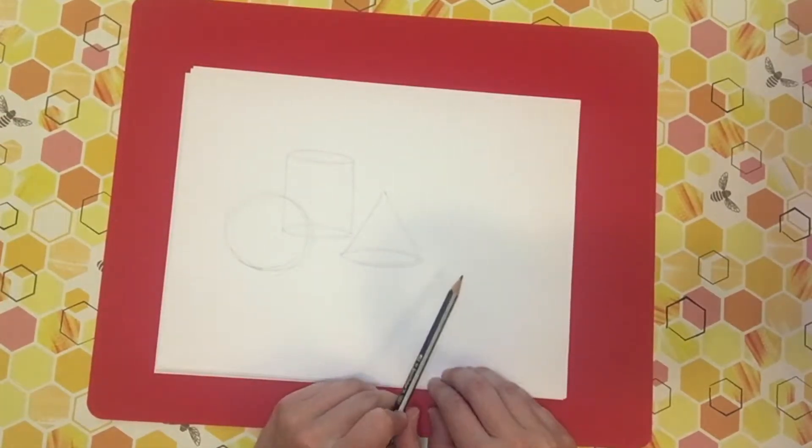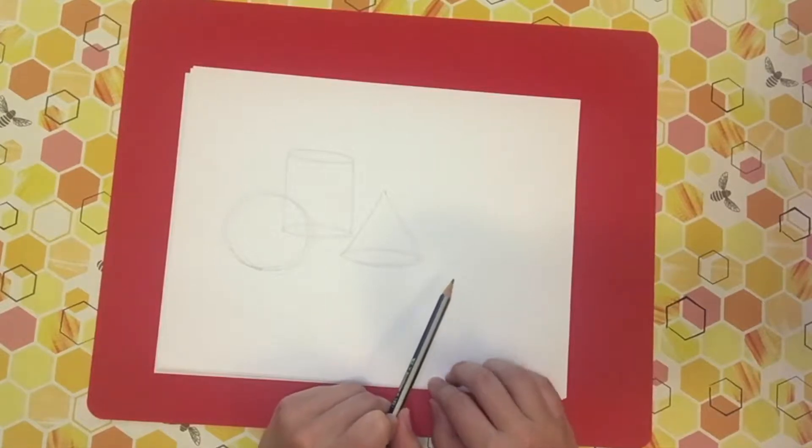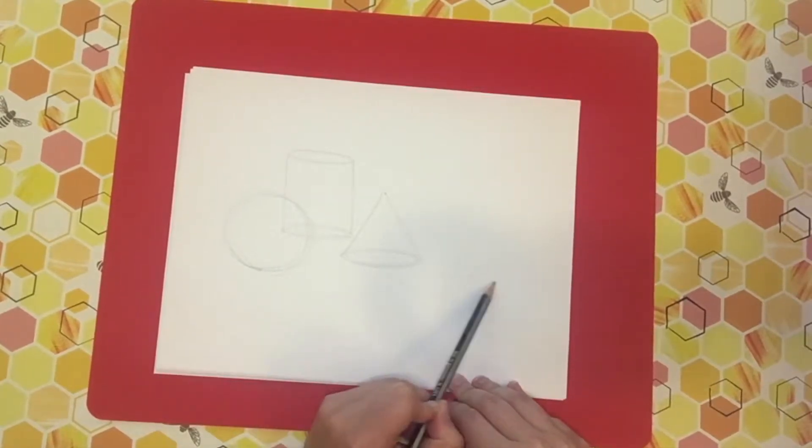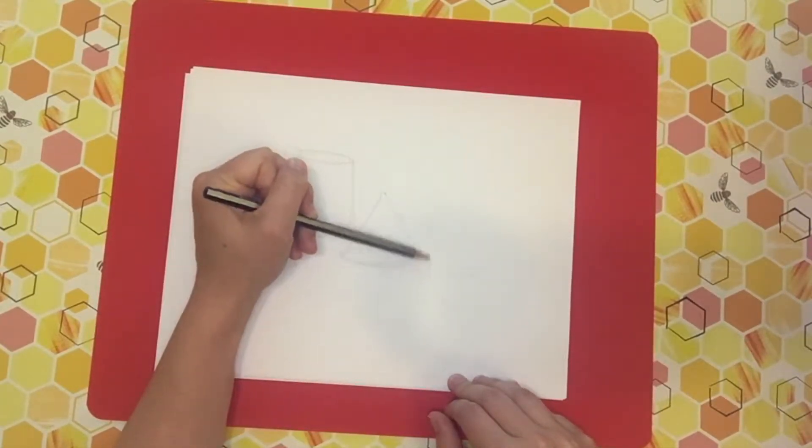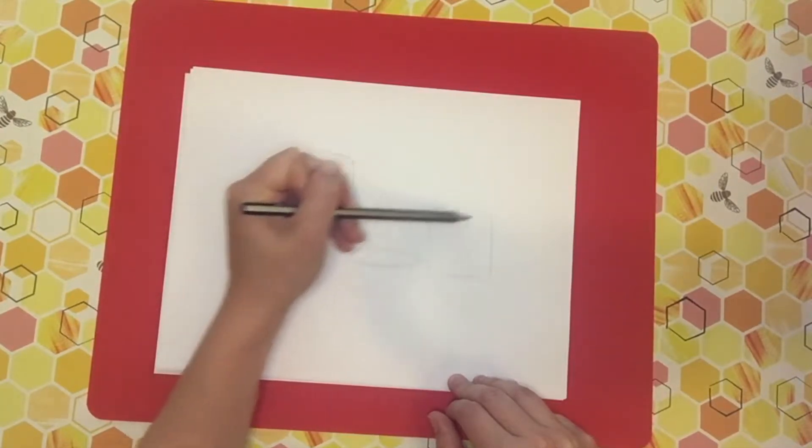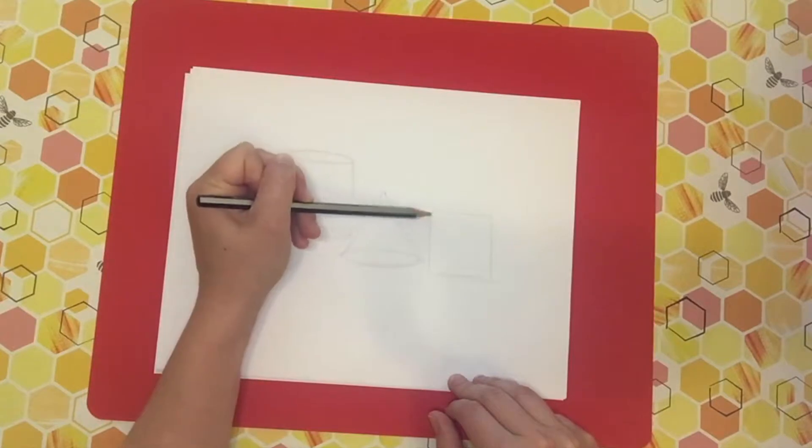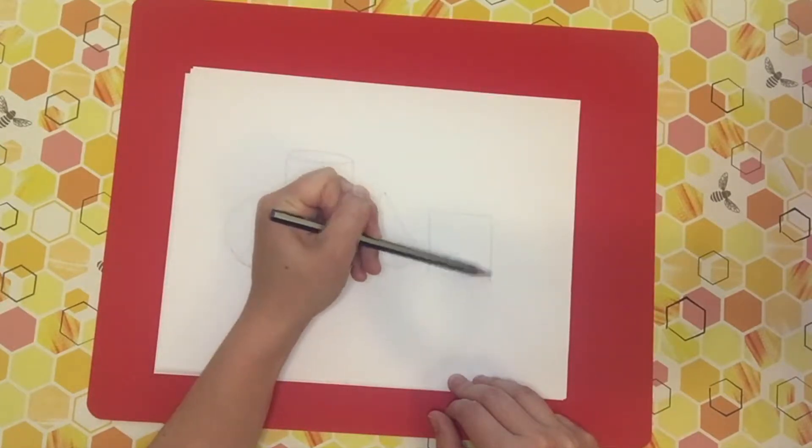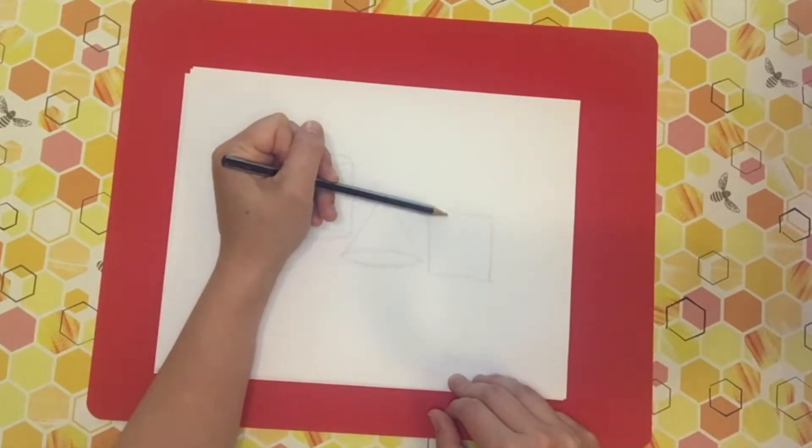And I'm also going to create a cube, which is a three-dimensional version of a square. So I'm going to create my square here, one part of this square. And next up I'm going to draw another square up and to the right a little bit. This can go in any direction you wish.